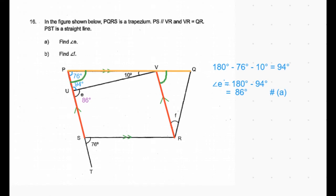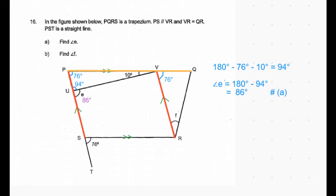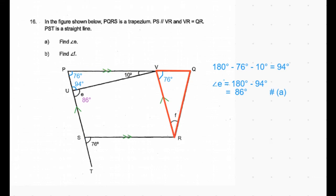The two angles marked in green, which are angle SPV and angle RVQ, are equal to each other. We found that the angle at P is 76 degrees, so the angle at V is also 76 degrees. Now consider triangle VRQ.